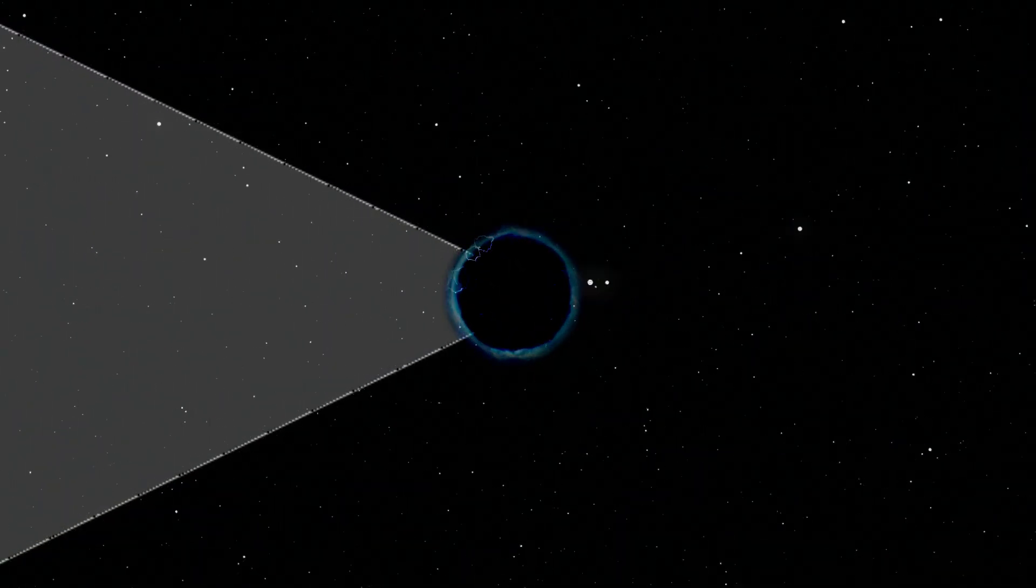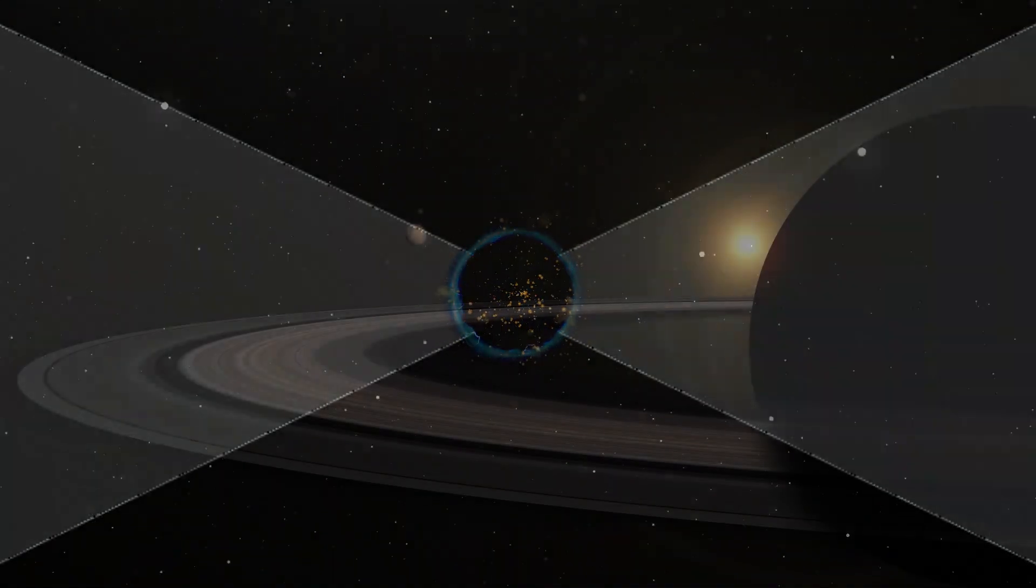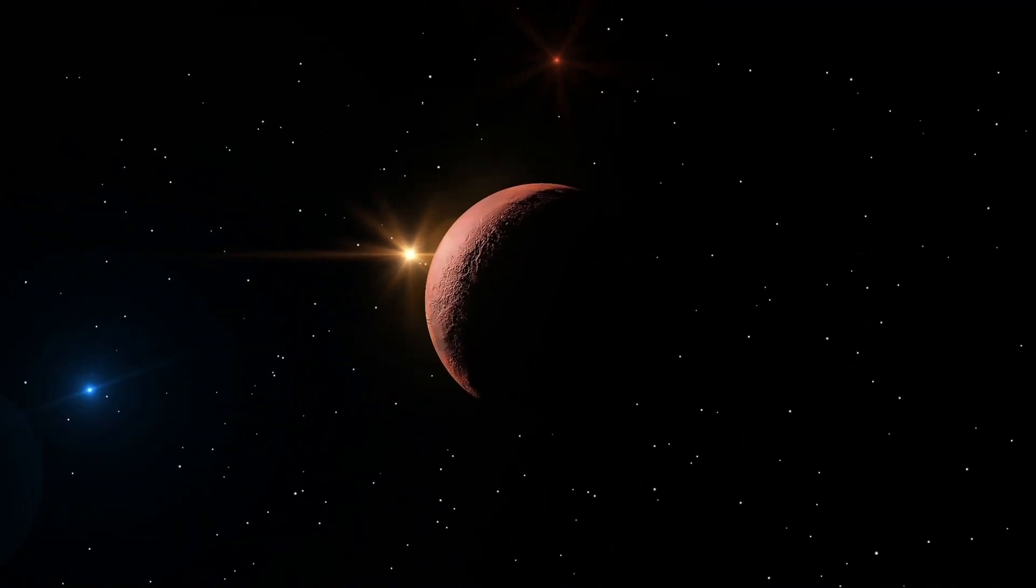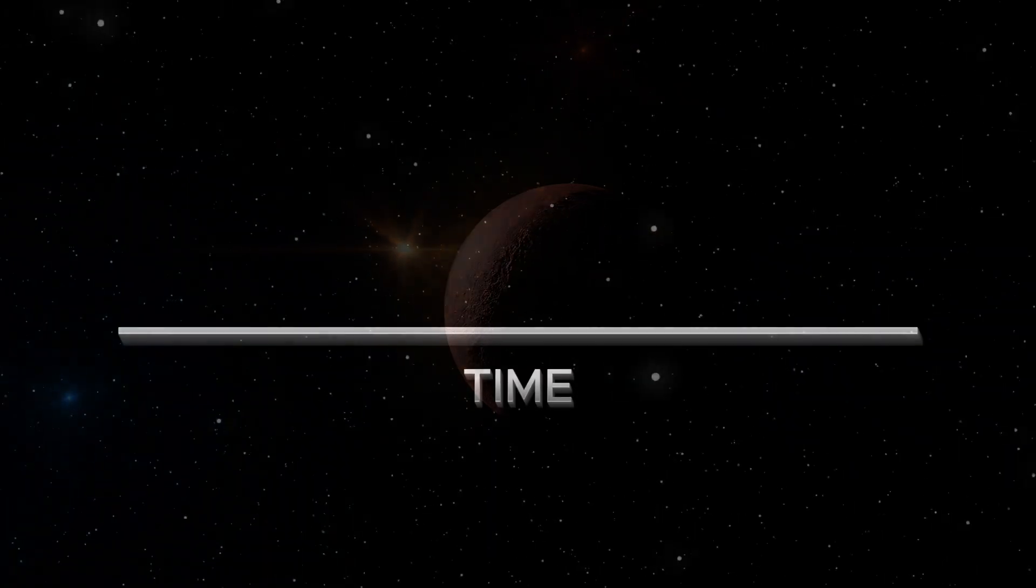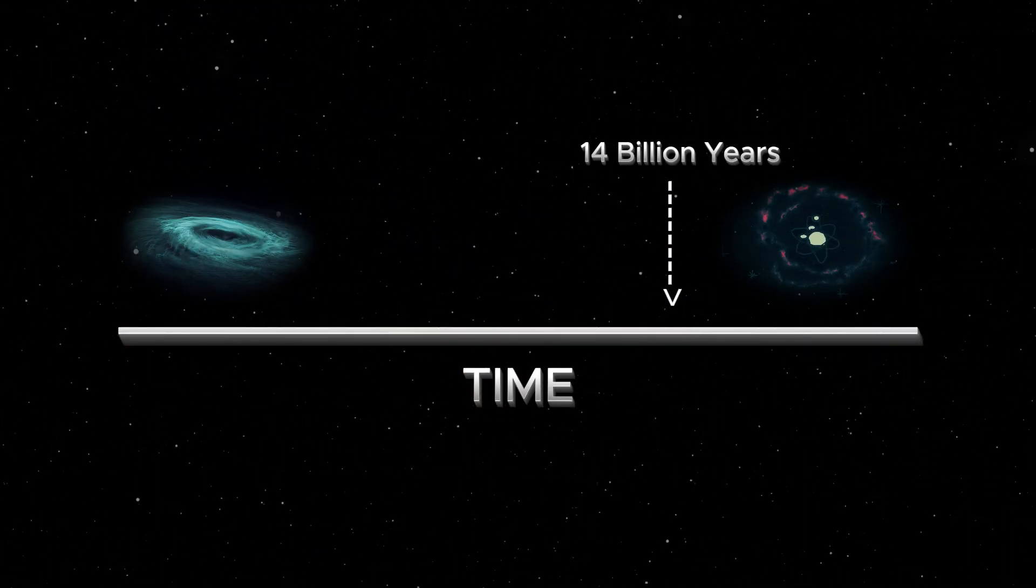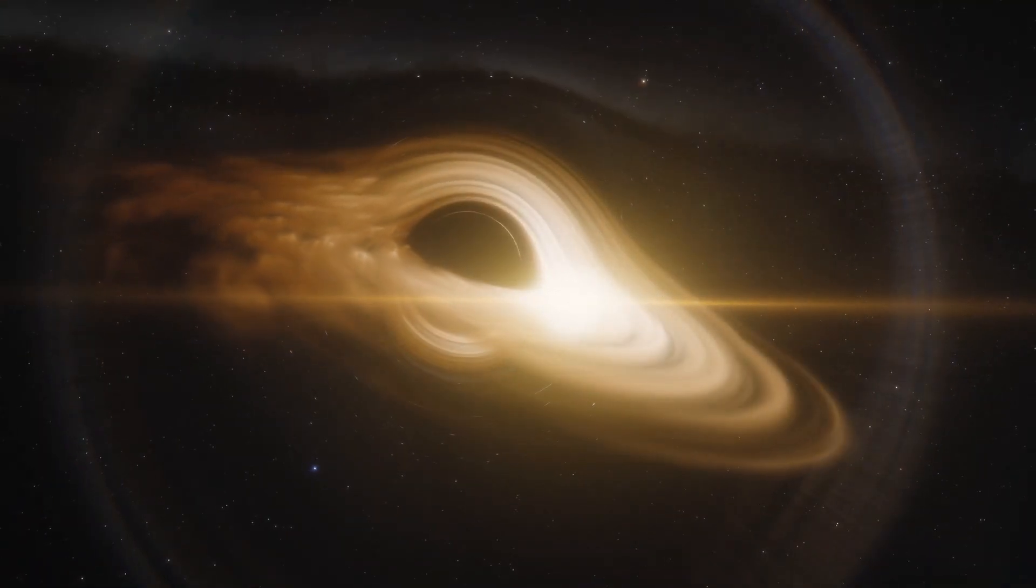Another Big Bang would occur, launching a brand new cycle of expansion. The universe would grow again, form galaxies, stars, and possibly even life, until far in the future it collapses again. In this view, the universe may have no true beginning and no final end. Instead, it has always existed, going through an infinite loop of Big Bangs and Big Crunches.